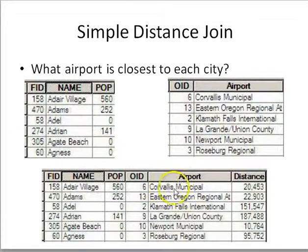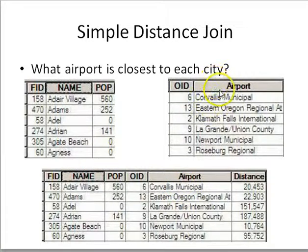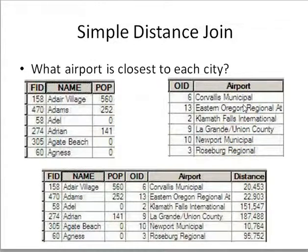Corvallis Municipal Airport could be listed several times as the closest airport to multiple cities — both Corvallis and Adair Village, for example. So even if I have 5,000 airports in my source data and only 30 cities, I'll end up with 30 features, each telling me which airport is closest. Not every airport in the source data will necessarily be used.